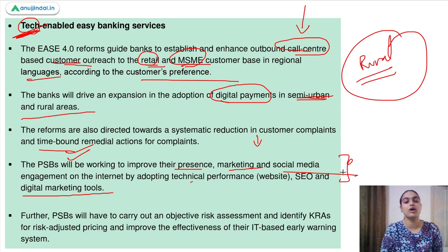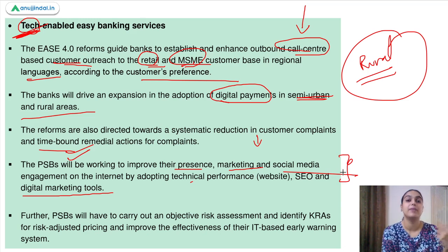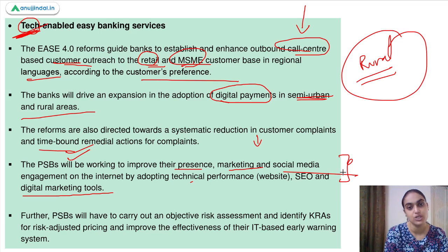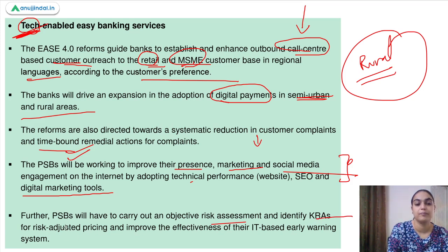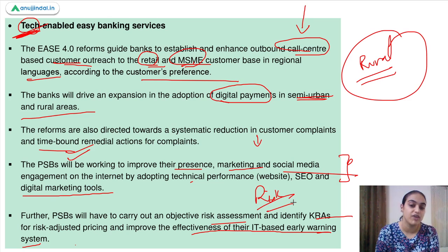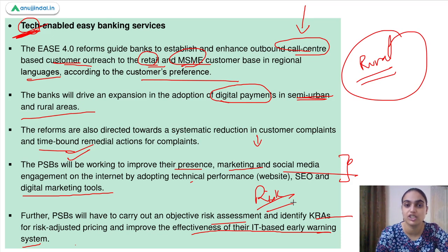Not only do banks need to address customer complaints, but they also need to increase their presence and marketing so that customers know about the banks and their services. More promotion should be done on social media platforms and digital tools. Public sector banks will also carry out risk assessment, identify key risk areas, and improve the effectiveness of their IT-based early warning systems. Technology such as different software can help identify risks early, so they don't become major problems.